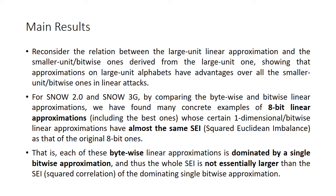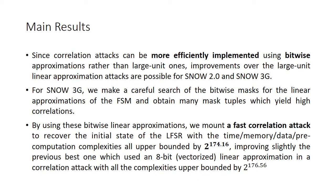That is, each of these bitwise approximations is dominated by a single bitwise approximation, and thus the whole SEI is not essentially larger than the SEI with the dominating single bitwise approximation. Since correlation attacks can be more efficiently implemented using bitwise approximations rather than large unit ones, improvements over the large unit linear approximation attacks are possible for SNOW 2 and SNOW 3G.